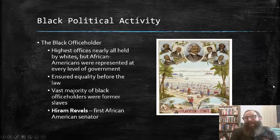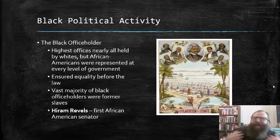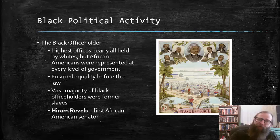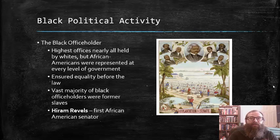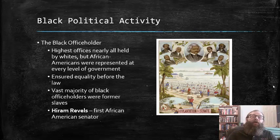Black political activity in this period did not confine itself to merely direct political actions or voting — it also manifested in actual black office holding. While the highest political offices were nearly all held by whites, African Americans were represented at every level of government. This helped ensure, at least for a while, equality before the law for African Americans in the South. The vast majority of black officeholders were former slaves, a radical transformation in their status and station in Southern society.